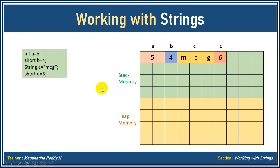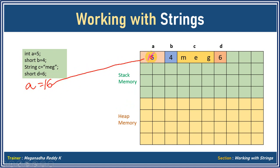Now what happens after these four lines when I write a = 16? This five will be overwritten with sixteen. As long as a is assigned within the range of values it can store, it will be stored in the same location. When I write a = 30, no problem — thirty will be stored in the same location and the value will be overwritten.